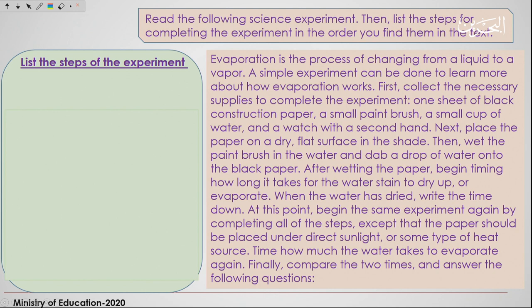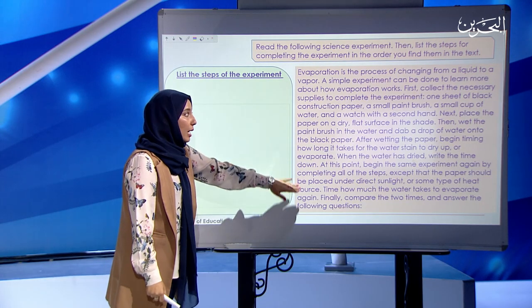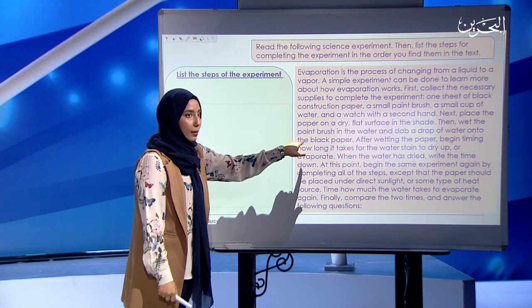After reading the paragraph, what I want you to do is list the steps for completing the experiment in the order you find them. As I told you, when you're going to explain a process to someone, you follow the chronological order — one, two, three, next, after that, finally, and so on. Go back to the paragraph and note them down in the order that you find them. I'll give you two minutes to note them down.